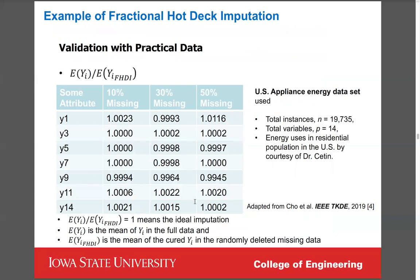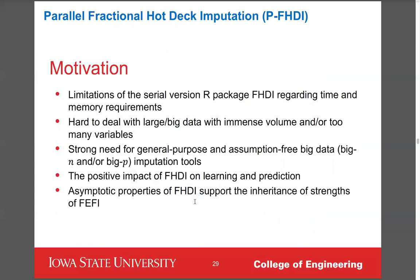This is another practical data validation of FHDI — close to one means good imputation. The motivation for parallel FHDI: the serial R package FHDI works well for small datasets but requires a lot of time and memory for medium or large datasets, and is not applicable when there are too many variables. There is a strong need for a general-purpose, assumption-free big data imputation tool, and the positive impact of FHDI on machine learning and statistical prediction will be inherited by parallel FHDI.